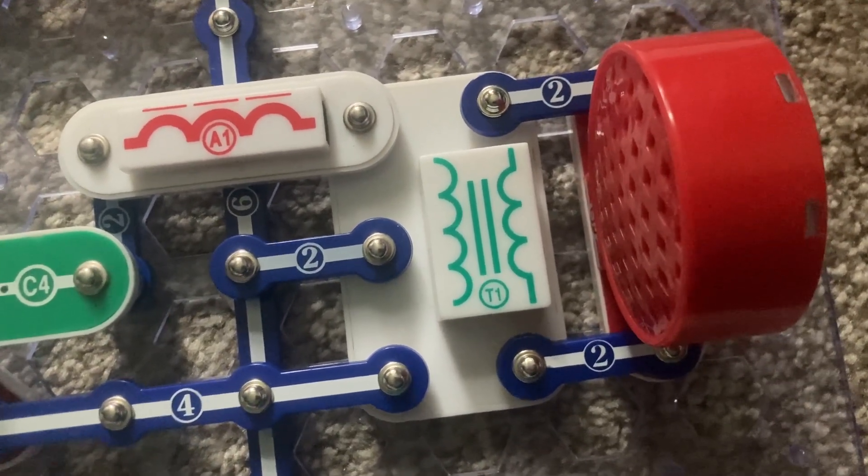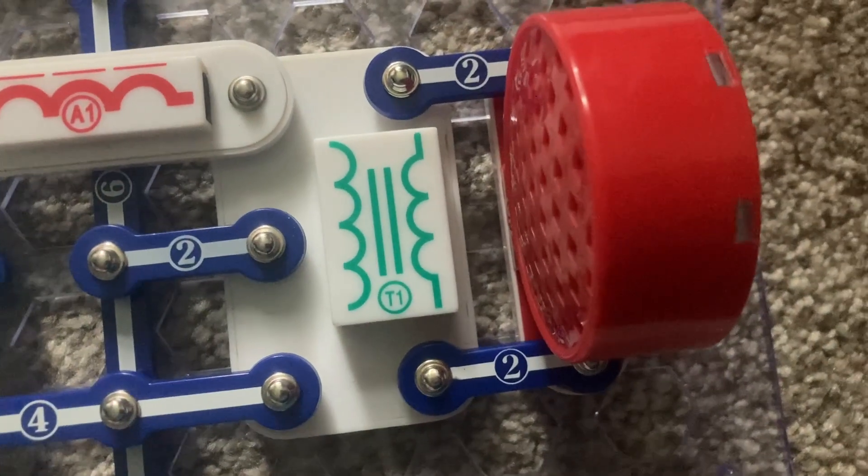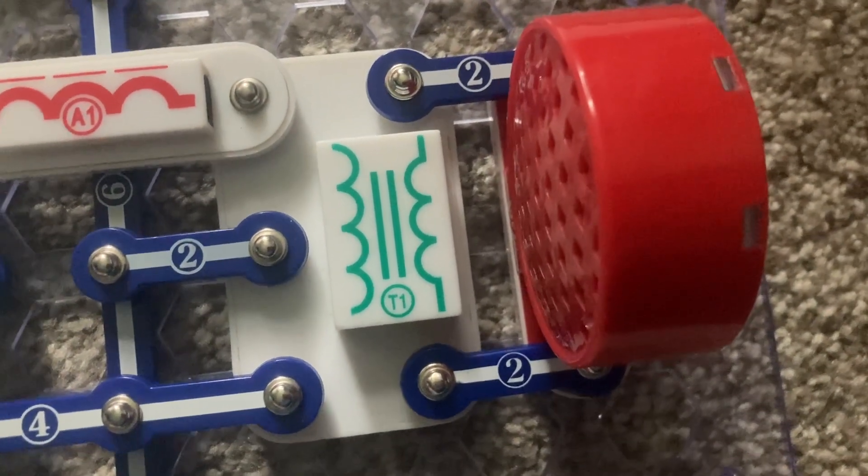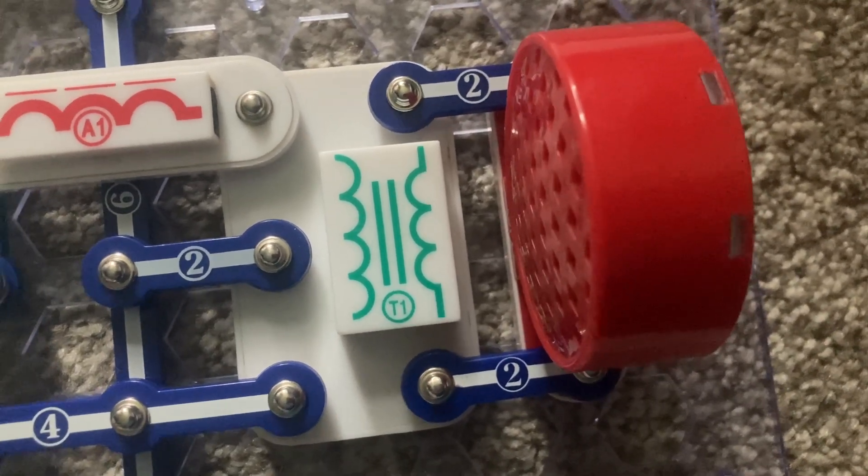And it may remind you of the sound of rain falling. Right now the rain sounds like a drizzle because the adjustable resistor is all the way to the left. And each clicking sound can represent a raindrop.